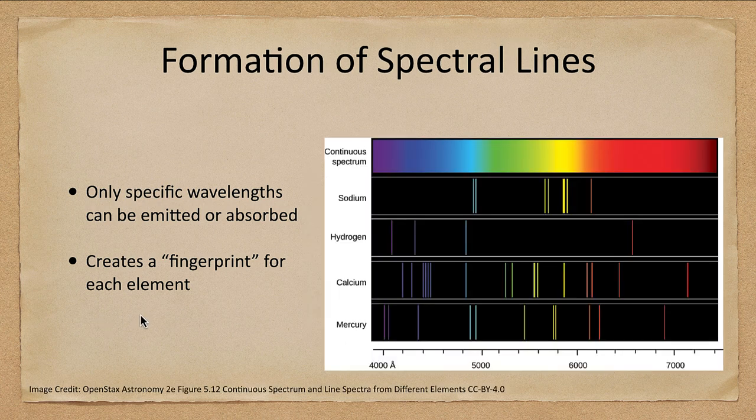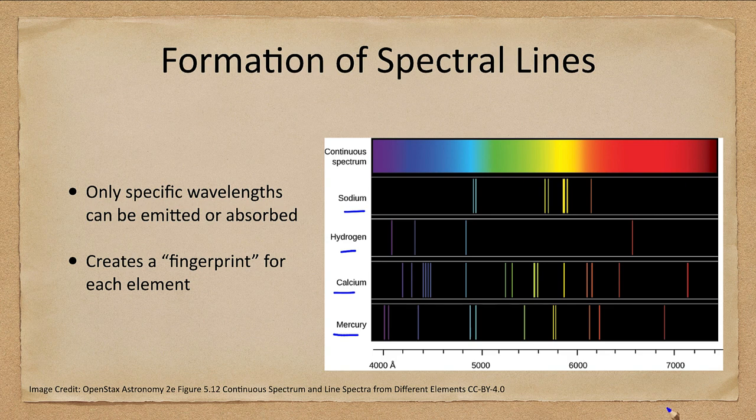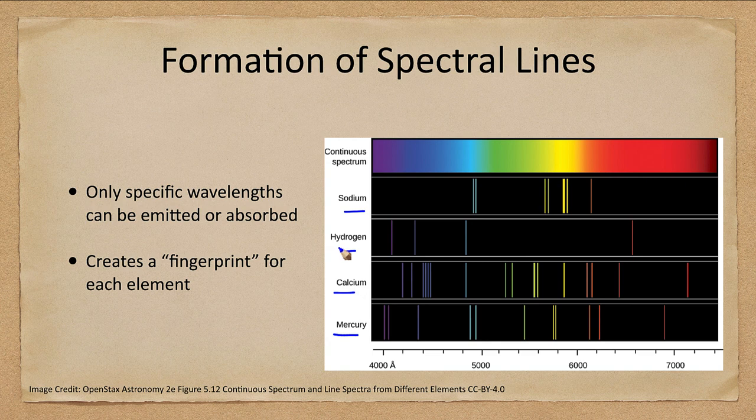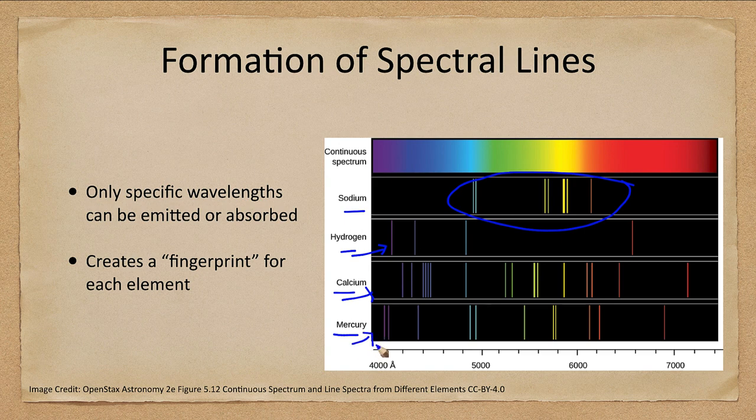So when we look at these here, here is an example of looking at various different atoms, and we see sodium has specific lines, hydrogen, calcium, and mercury. Now, some of them may look very close to each other, but the overall pattern is completely different. So if we look for this pattern of lines in an object, then we would know that sodium is present. This pattern would tell us hydrogen, this calcium, and this one would be mercury. So we can look for those distinct patterns that we see.